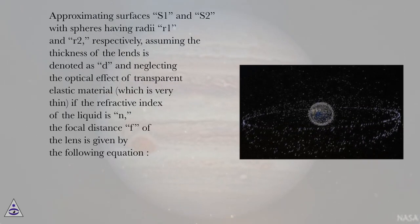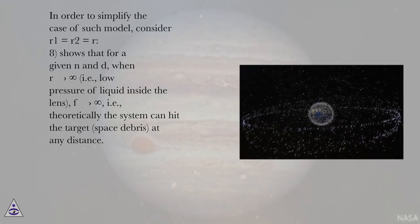Approximating surfaces S1 and S2 with spheres having radii R1 and R2, respectively, assuming the thickness of the lens is denoted as d and neglecting the optical effect of transparent elastic material, which is very thin, if the refractive index of the liquid is n, the focal distance f of the lens is given by the following equation. In order to simplify the case of such model, consider R1 equals R2 equals R.